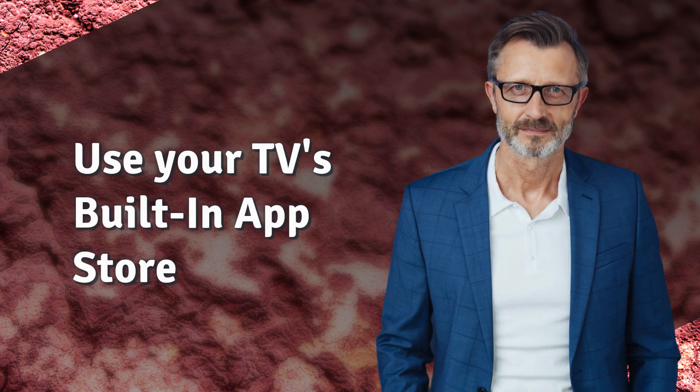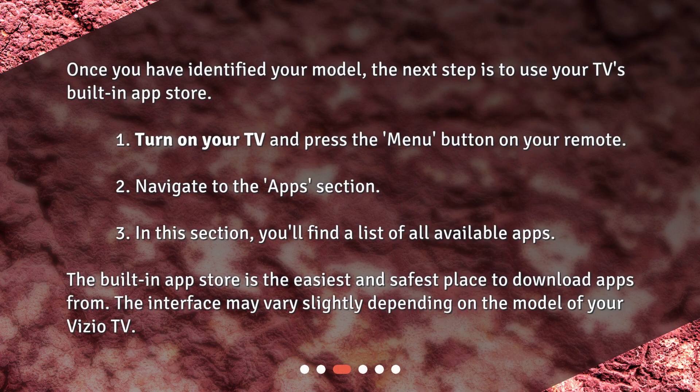Once you have identified your model, the next step is to use your TV's built-in App Store. Turn on your TV and press the menu button on your remote, then navigate to the Apps section. In this section, you'll find a list of all available apps. The built-in App Store is the easiest and safest place to download apps from. The interface may vary slightly depending on the model of your Vizio TV.